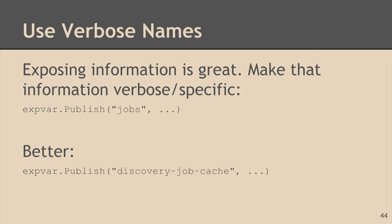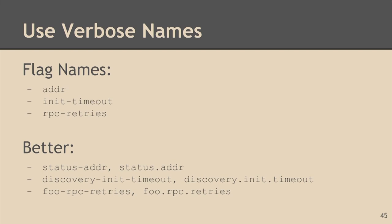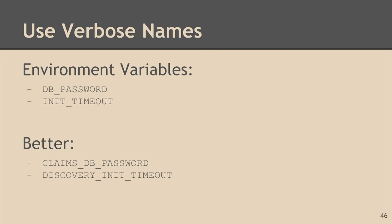Use verbose names. We're now at the point where we're exposing values and all this information. Remember, a lot of times the person maintaining the software didn't write it. I might think 'expvar published jobs' makes sense, but the person who inherits the code has no idea what 'jobs' means. So use a verbose name like 'discovery job cache.' The same goes for flag names — use nice long verbose names instead of short names. This also keeps you from colliding with other flag values. The practice we've been adopting is using the package path as the flag name. The same goes for environment variables: instead of 'DB_PASSWORD,' maybe 'CLAIMS_DB_PASSWORD'; instead of 'INIT_TIMEOUT,' maybe 'DISCOVERY_INIT_TIMEOUT.'